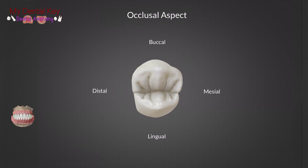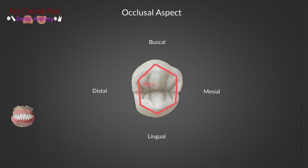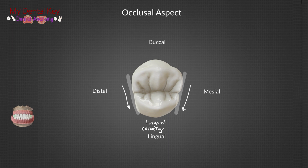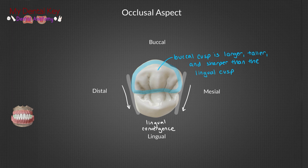Moving onto the occlusal surface, the maxillary first premolar has a hexagonal shape from the occlusal aspect. We can see the lingual convergence very clearly, as the lingual cusp is narrower than the buccal cusp. The buccal cusp is larger, taller, and sharper than the lingual cusp — the buccal cusp even forms more of a triangular shape compared to the lingual cusp, which has a semicircular shape.